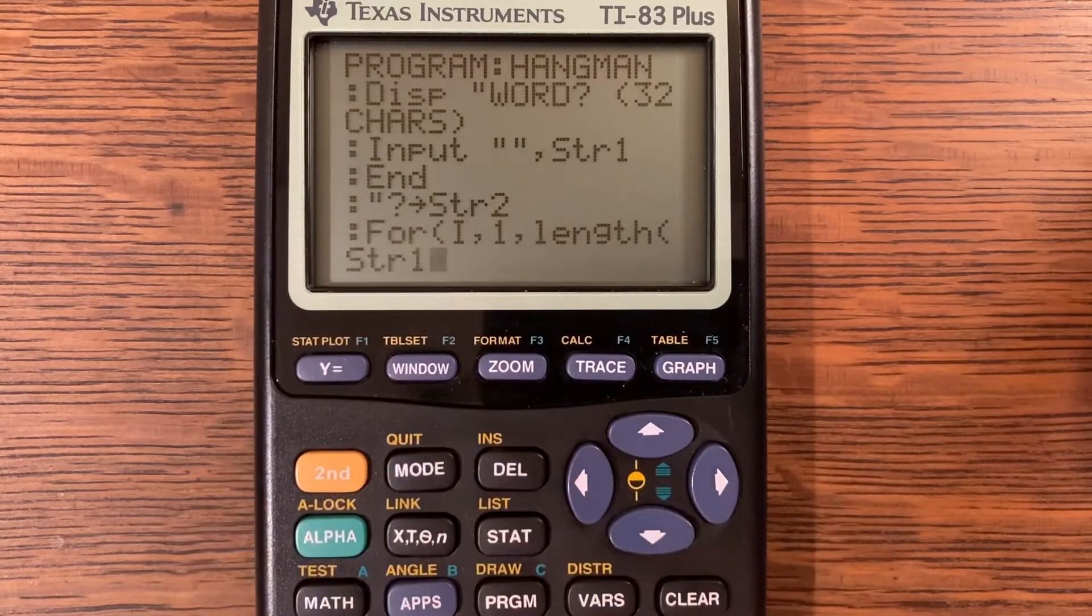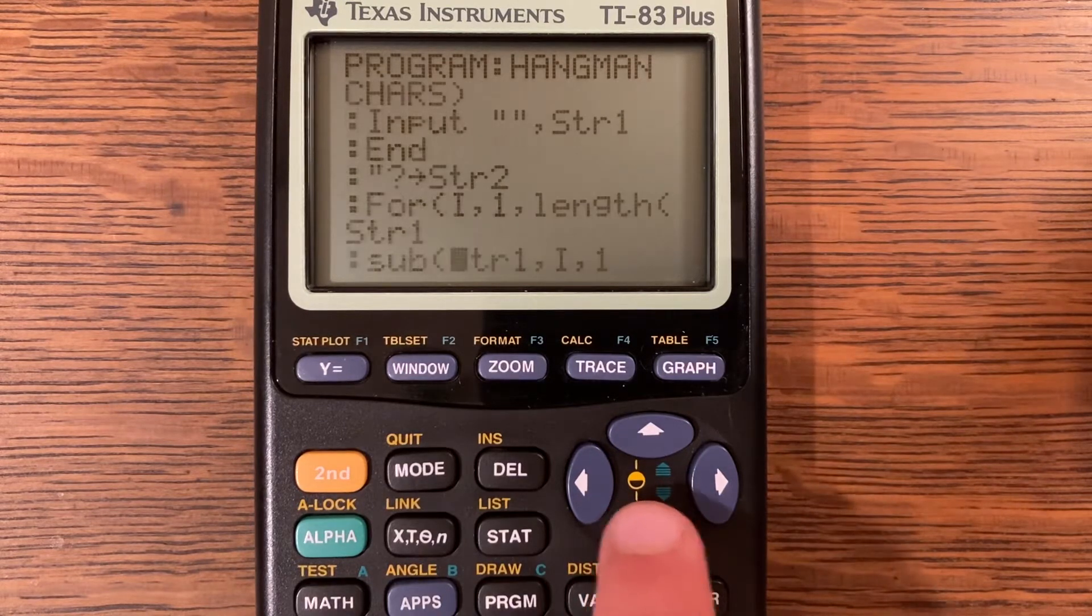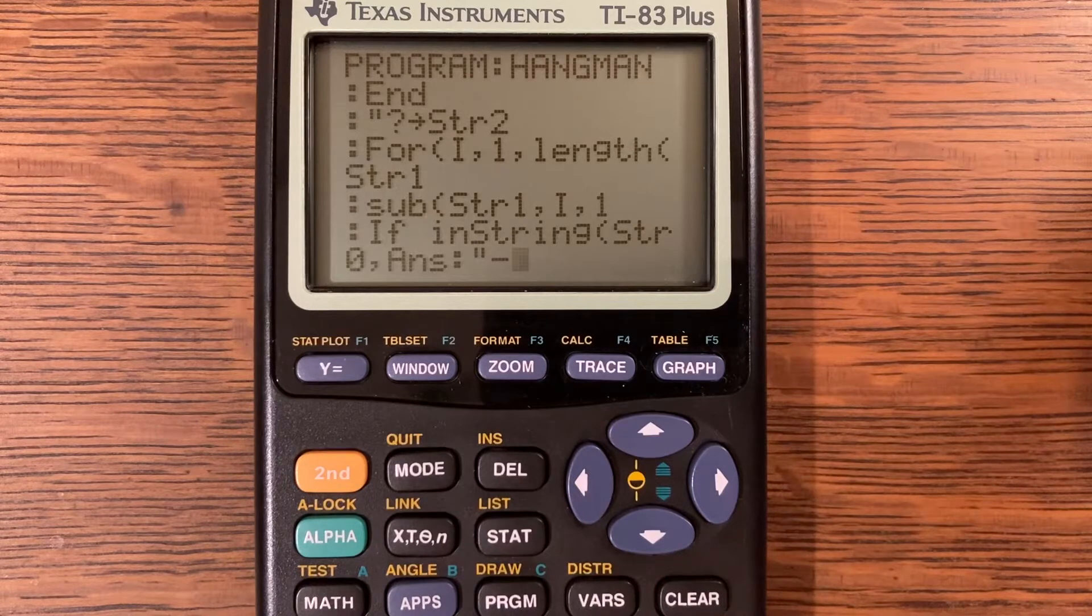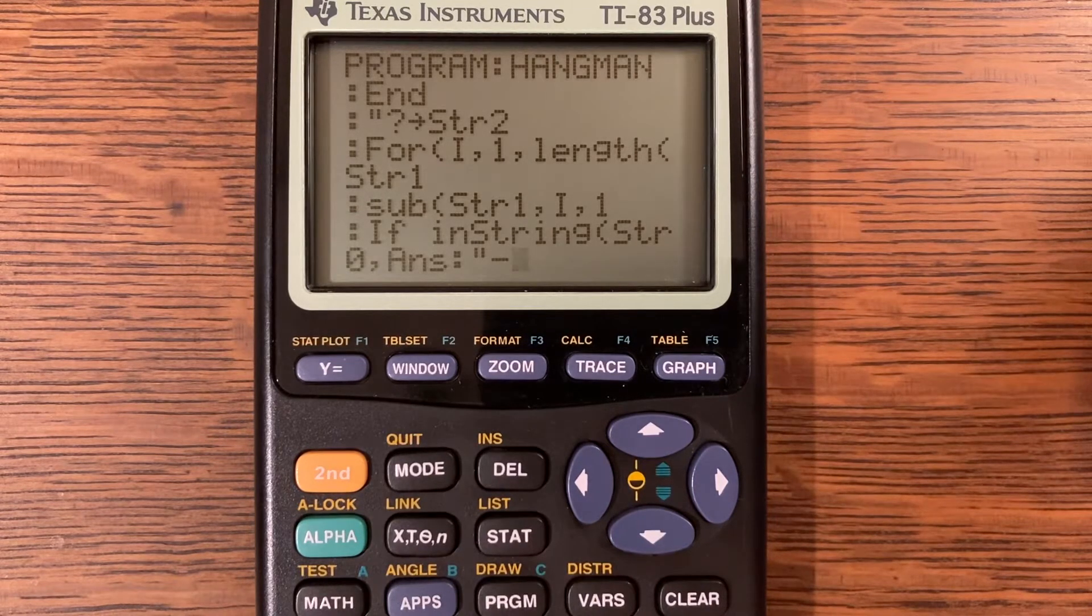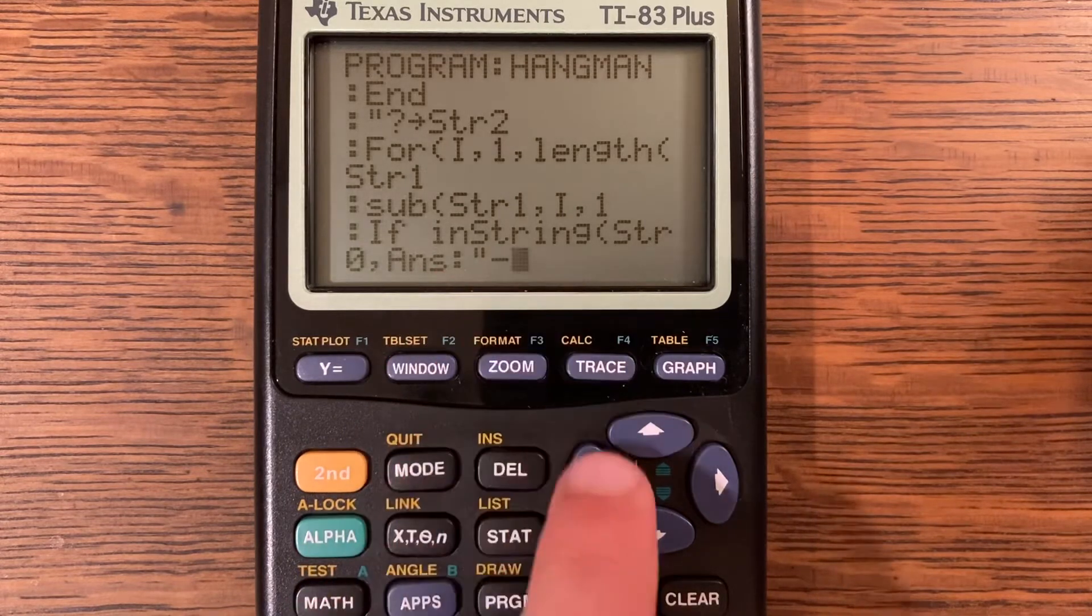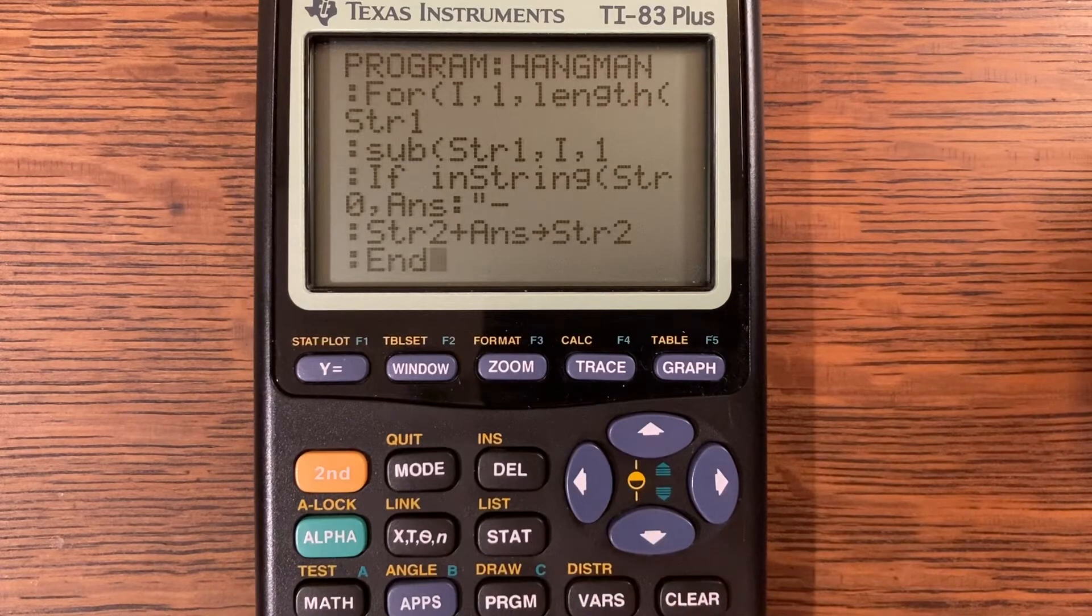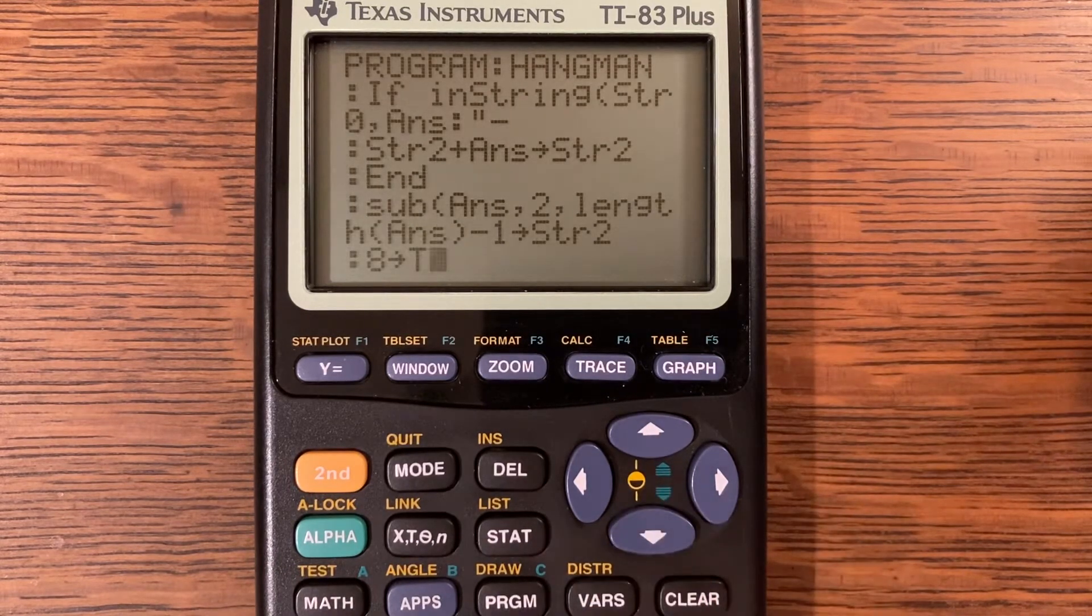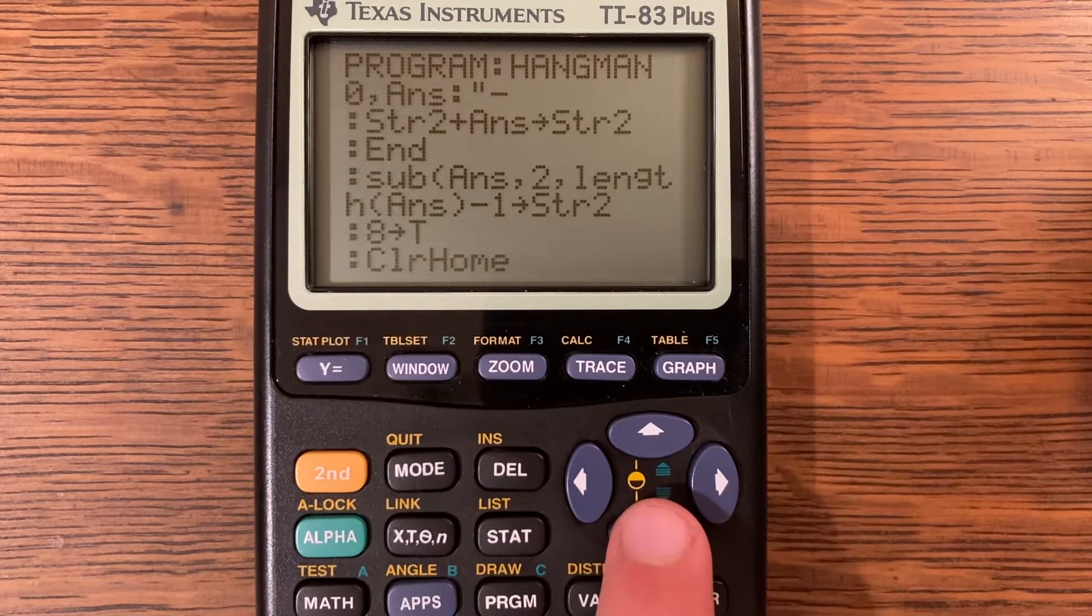A quote and a question mark store into string two. For i comma one comma length of string one, sub string one comma i comma one. If in string string zero comma answer comma quote a minus, and there's also a colon there. String two plus answer store into string two. And sub of answer comma two comma length of answer minus one store into string two. And eight store into t.